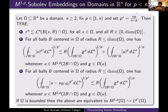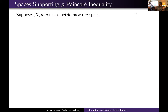We see that this measure condition, although not strong enough alone to characterize W^{1,p} embeddings, is enough to characterize M^{1,p} embeddings on the domain. That brings the first portion of this talk to a natural conclusion. In the second part, I want to discuss how the techniques we used — showing M^{1,p} embeddings imply the lower measure bound — can be used to obtain results about spaces supporting a p-Poincaré inequality, leading to a characterization of p-admissible weights in the Euclidean setting.